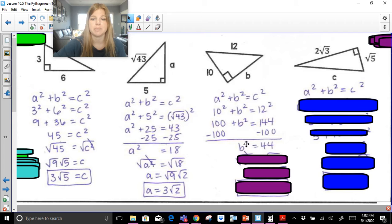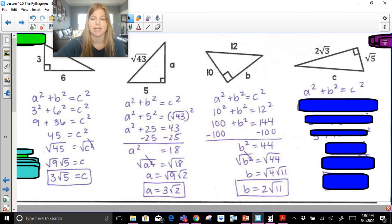I get B squared equals 44. We know the opposite of squaring something is to take the square root. That just leaves me with B equals, now, biggest perfect square that goes into 44 is 4. So this becomes radical 4, radical 11, which is 2 radical 11.